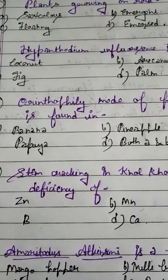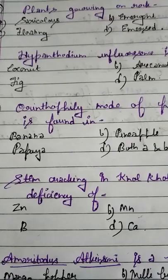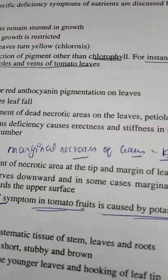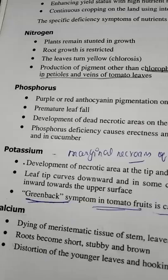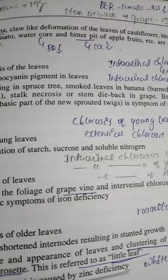Student, question number 5. You have to tell which of the following causes stem cracking in kohlrabi. Physiological disorders are very important — make sure that 2-3 questions will be asked regarding physiological disorders in every exam. I am telling you some of the important physiological disorders.